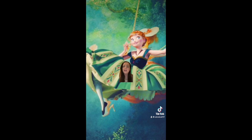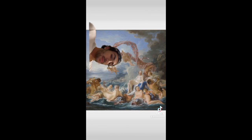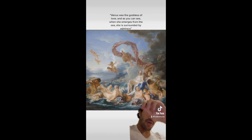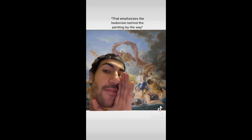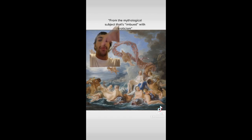Overall the Rococo era had a huge impact throughout history, and its influence can even be seen today in fashion, art, and even movies. This is 'The Triumph of Venus.' The artist behind this was Boucher, one of the greatest artists of the Rococo era. You can see where Venus emerges from the sea — Venus was the goddess of love — and as she emerges she's surrounded by all these admirers, which emphasizes the hedonism behind the painting.